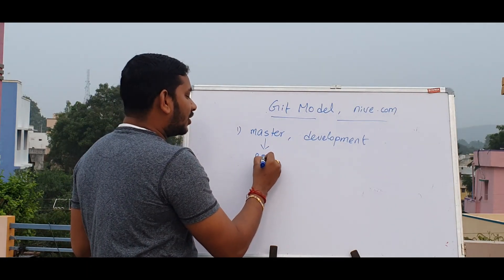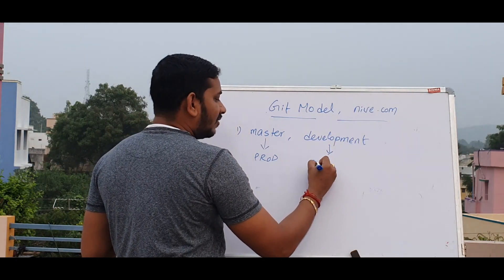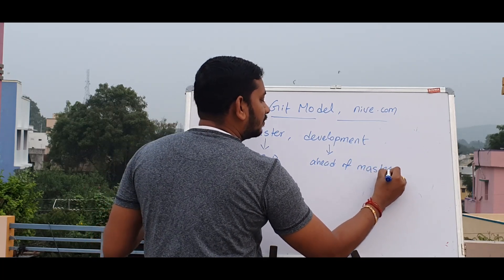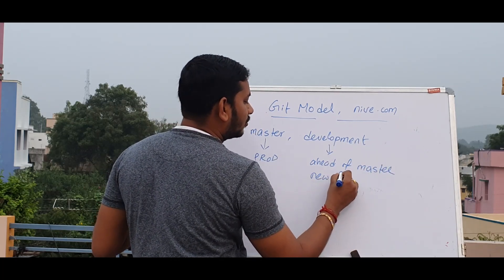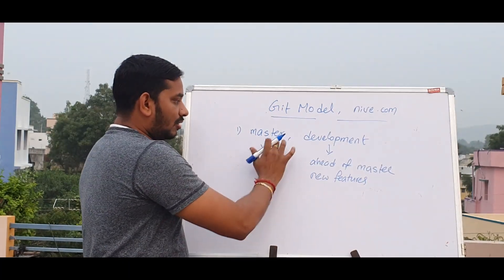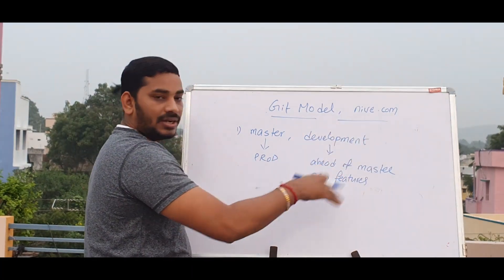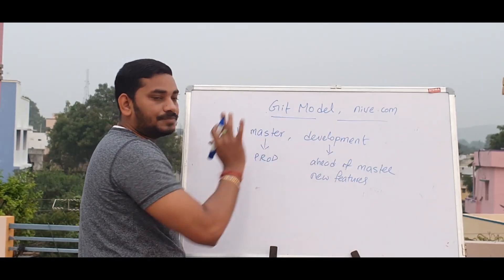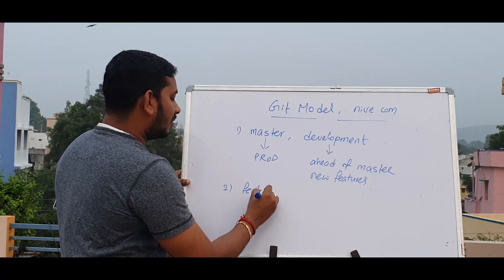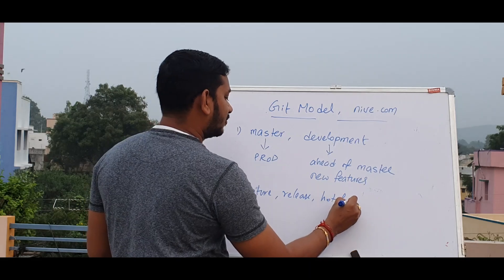Master represents production. Development is always ahead of master — new features are developed here. The short-lived branches are: Feature branch, Release branch, and Hotfix branch.